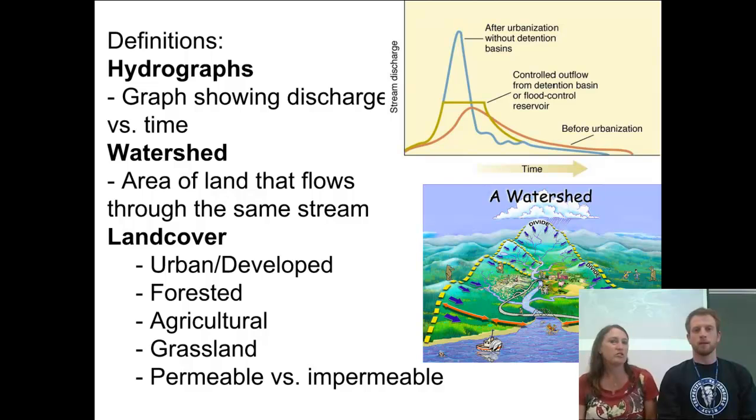And then we have another term called watershed. And this is just an area where all the water flows to the same place. So like picture if in a bathtub, all the water that falls in the bathtub is going to stay in the bathtub. So it's all going to flow towards that same drain.